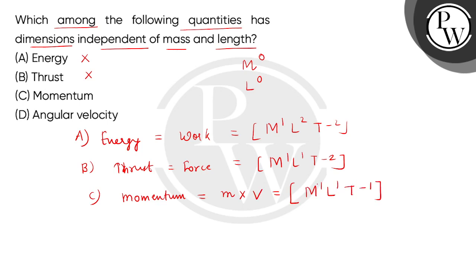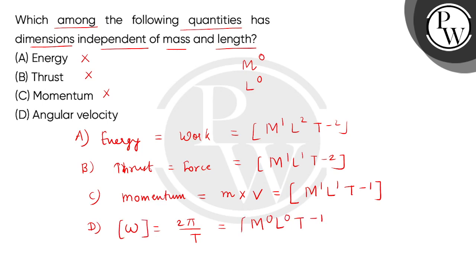So this option is incorrect. And option D, we have angular velocity, which we write as 2 pi divided by time period, in which we get M dimension 0, L dimension 0, T dimension minus 1. So we can see that angular velocity is a quantity that is independent of mass and length. So the correct answer is option D.